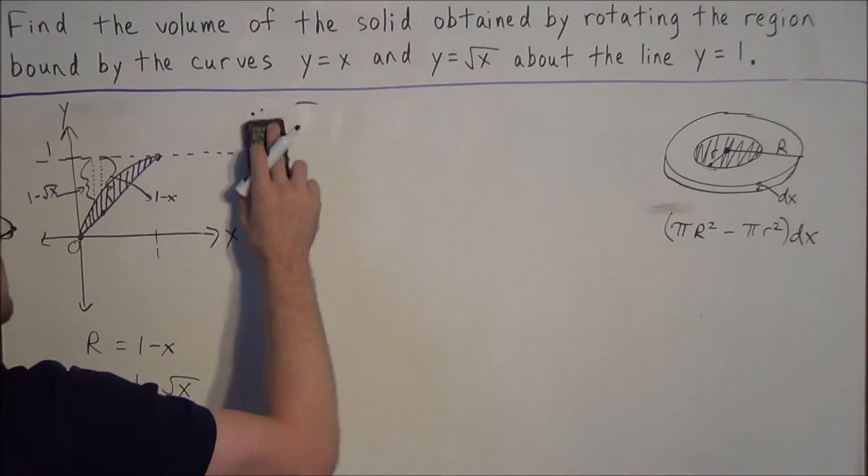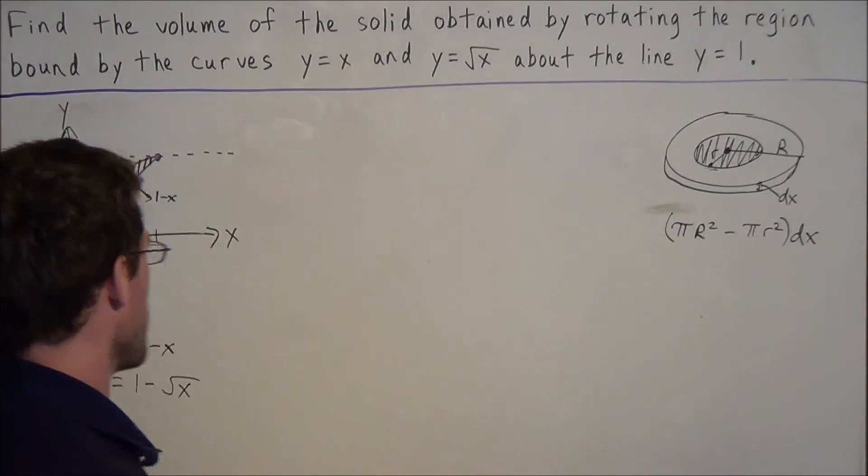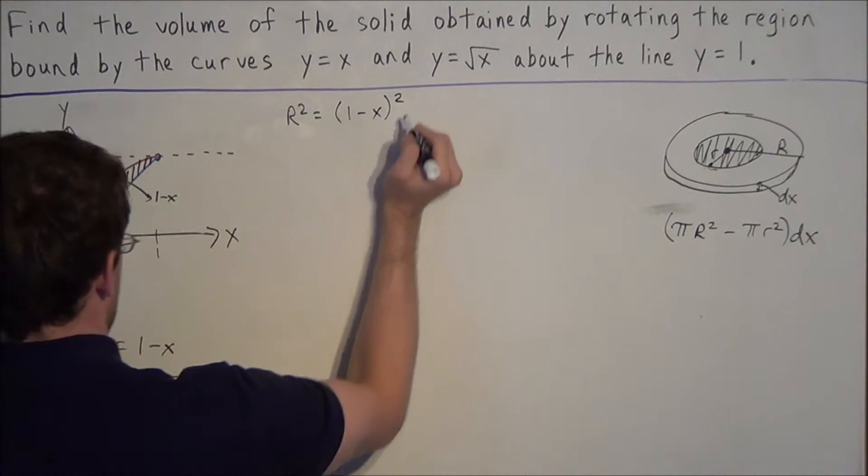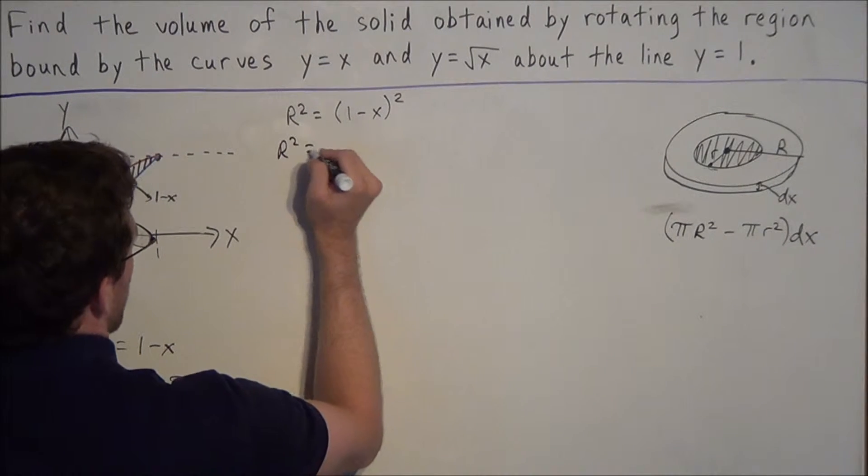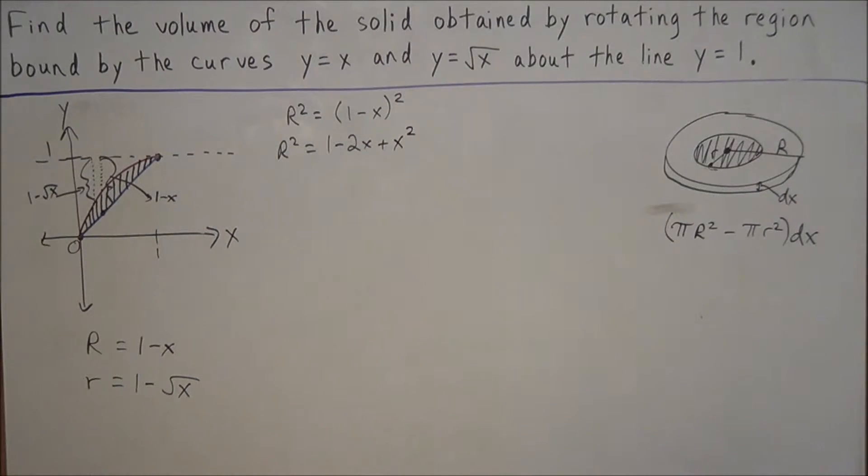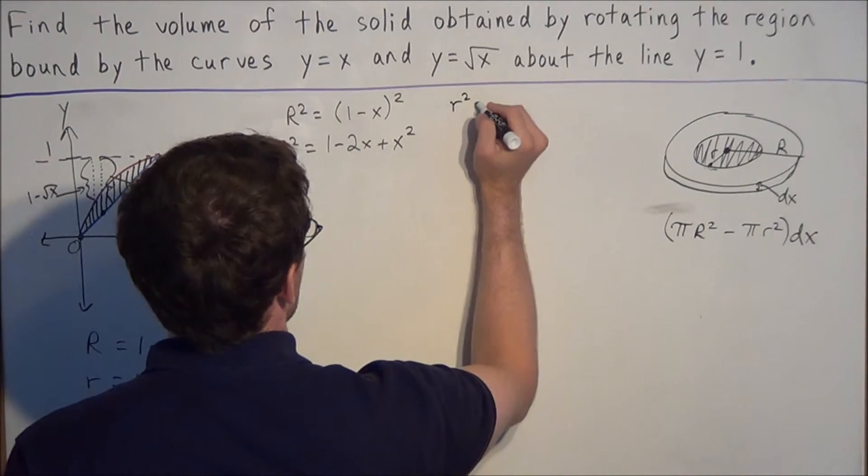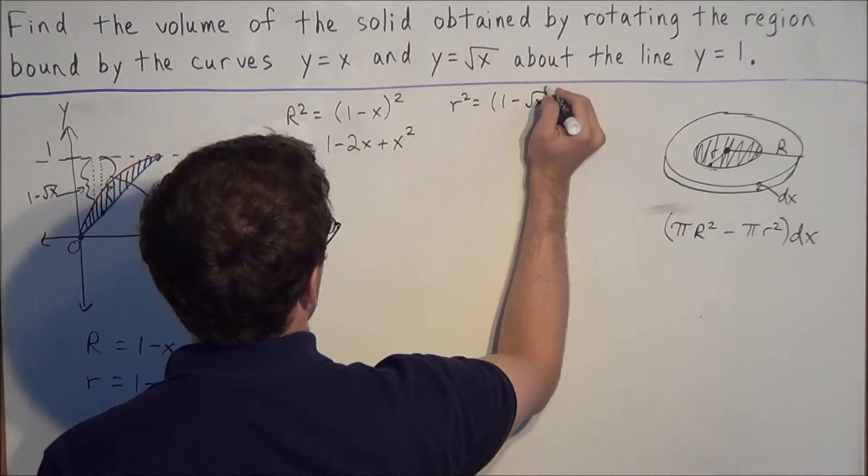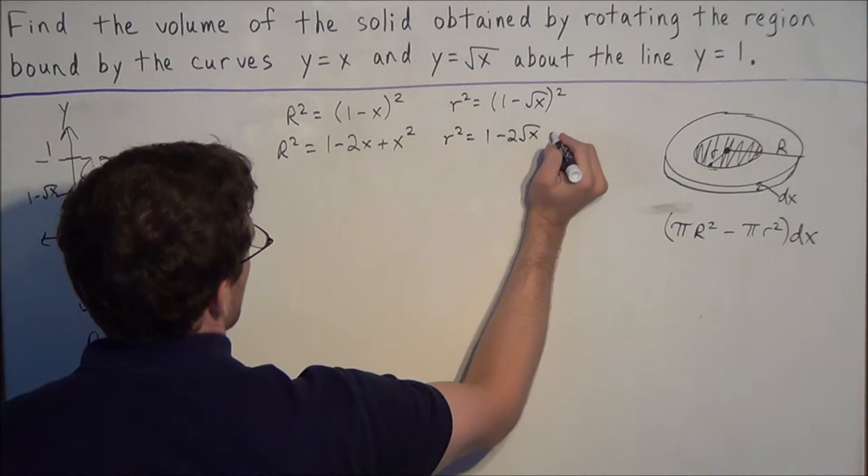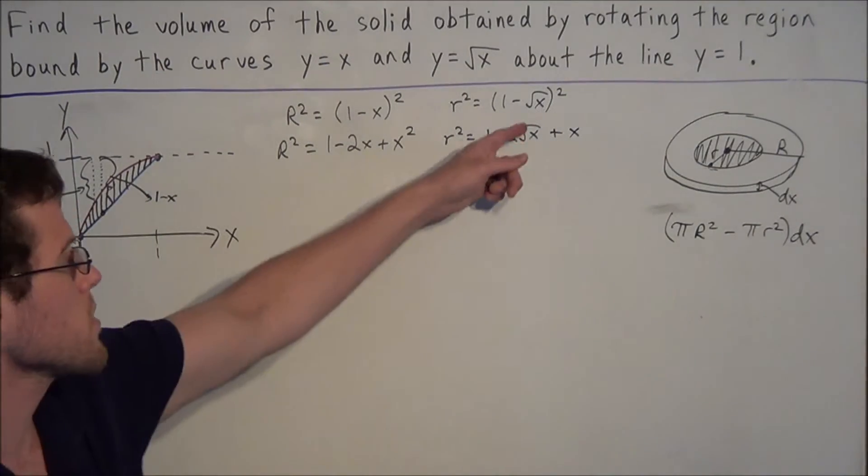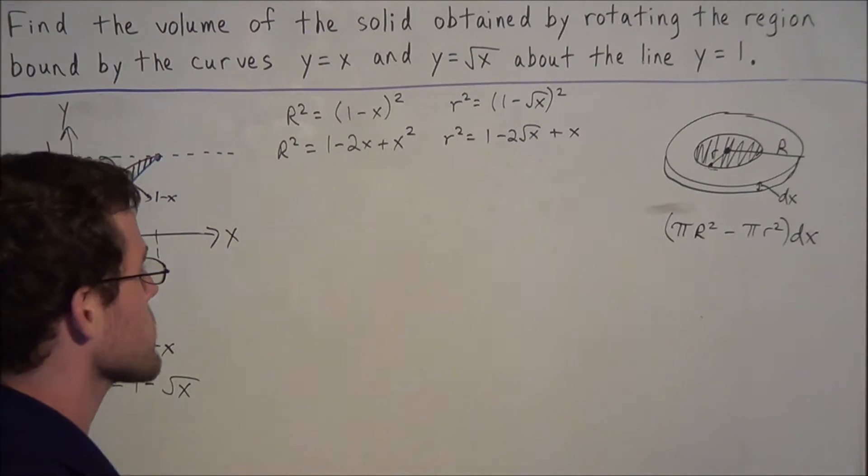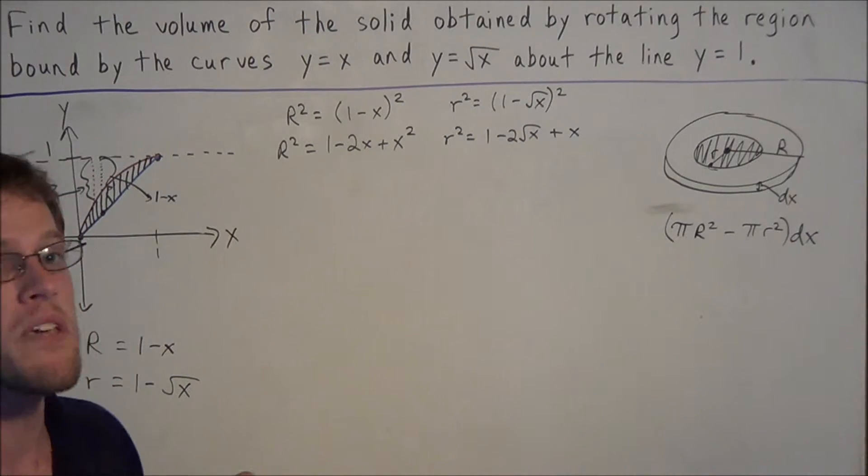So now that we have this, we can go ahead and calculate the other values that we need. We need r squared, or in this case capital R squared, which is generated by 1 minus x squared. And now, I'm not going to really go through the algebra, I'll go through this relatively quick. We have 1 minus 2x plus x squared. And now, if we're looking for lowercase r squared, this is we have 1 minus square root x, this quantity squared. And when we work this out, we have 1 minus 2 radical x plus x, like this, when we multiply negative radical x times negative radical x. Because we are between 0 and 1, we have this plus x on the outside.